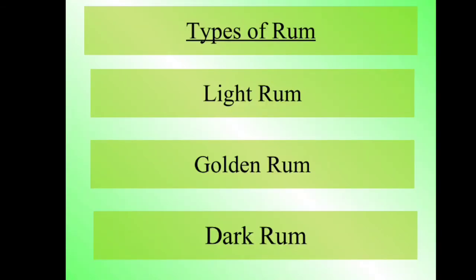Now we are going to learn the types of rum. There are three main types: first is light rum, second is golden rum, and the third is dark rum.